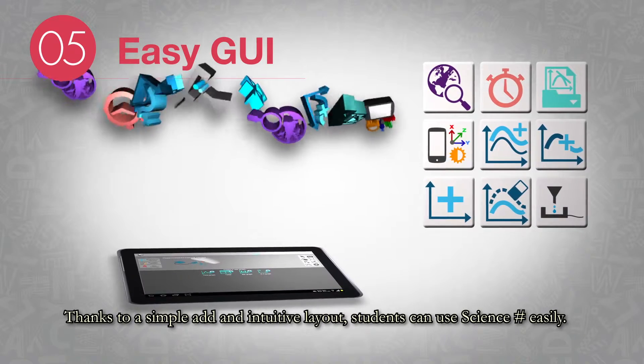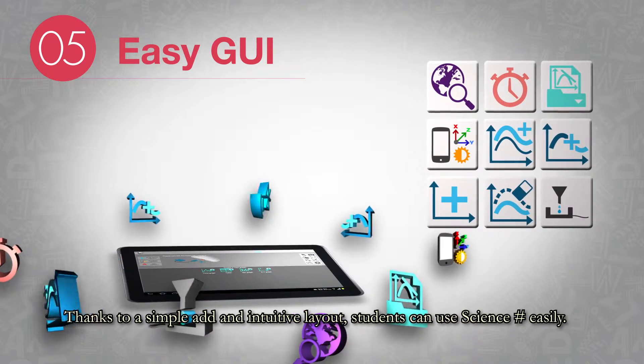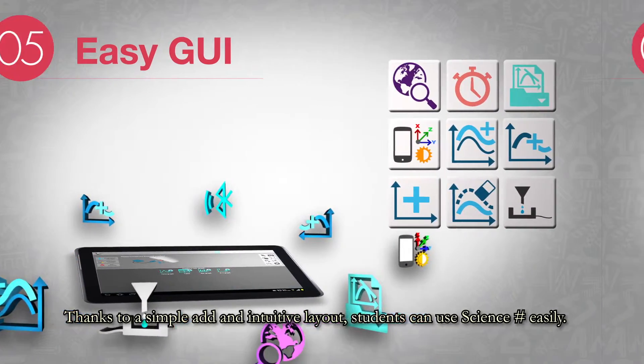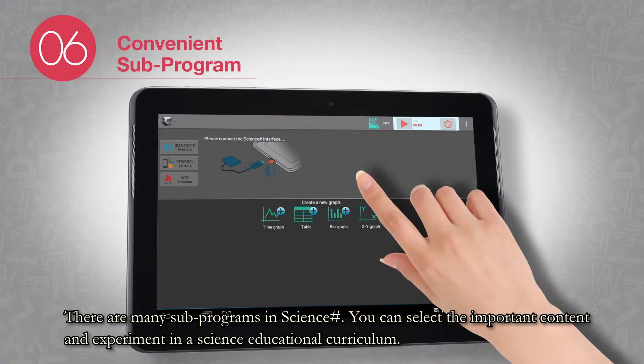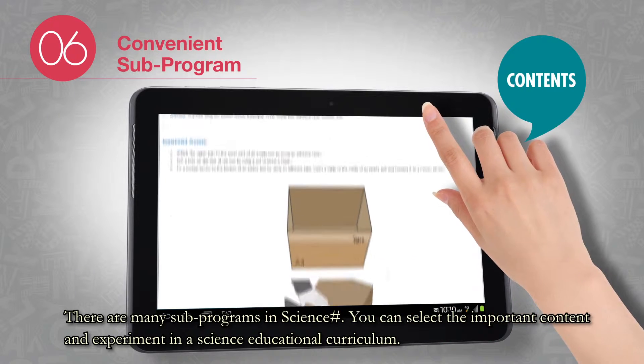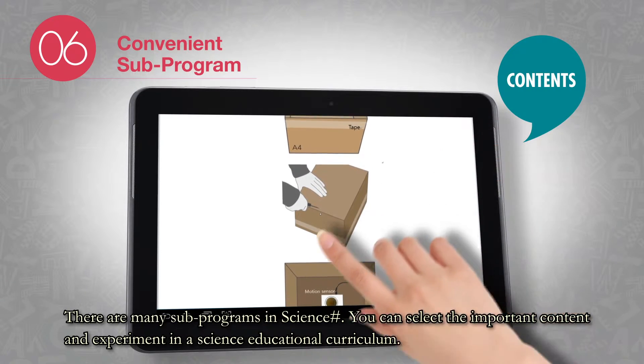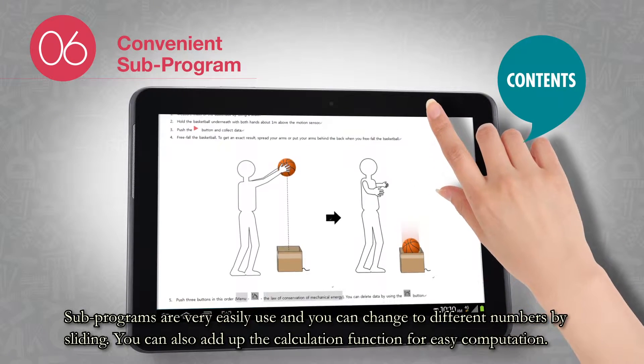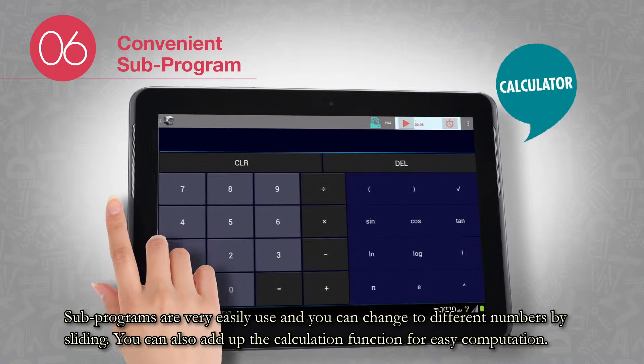Thanks to a simple and intuitive layout, students can use Science Sharp easily. There are many sub-programs in Science Sharp. You can select important content and experiments in a science educational curriculum. Sub-programs are very easy to use and you can change to different windows by sliding. You can also add the calculation function for easy computation.